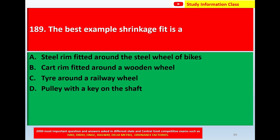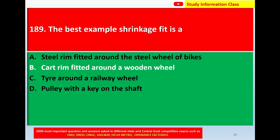Next, question number 189: The best example of a shrinkage fit — option A: steel rim fitted around the steel wheel of bikes, option B: cot rim fitted around the wooden wheel, option C: tire around the railway wheel, option D: pulley with key on the shaft. The correct answer is option B: cot rim fitted around the wooden wheel.